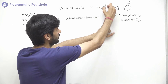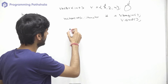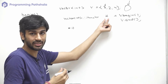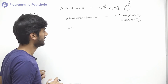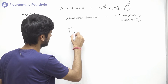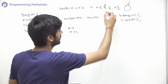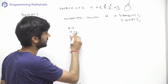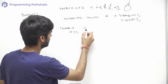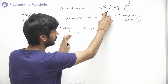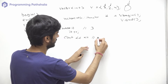Now 'it' will be pointing to the first element of the vector. To access that value, we use star it (*it). Since 'it' is an iterator pointing to the element, *it gives the value. If we do it++, the iterator moves to the second element. So if we print *it after it++, it will print 2.